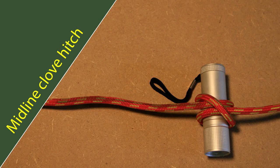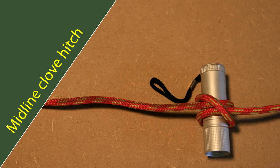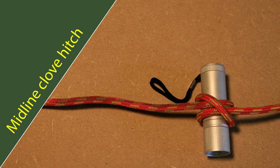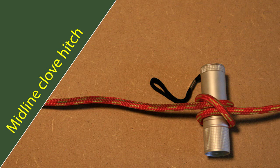The midline clove hitch is a variation of the regular clove hitch, except that this one can be tied in the middle of the line without having access to the end of the rope. Also, some people find it easier to tie a clove hitch this way.